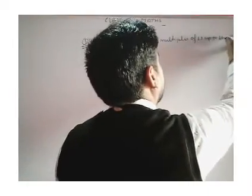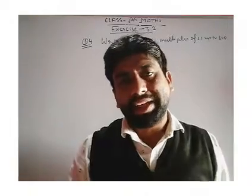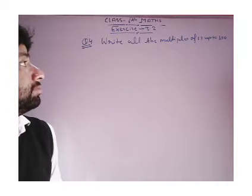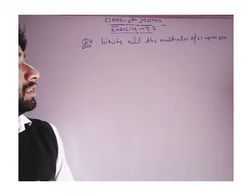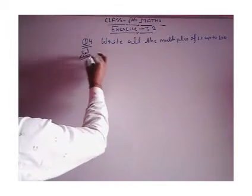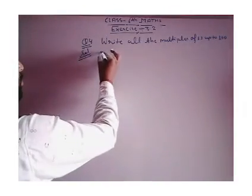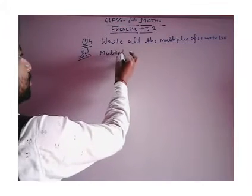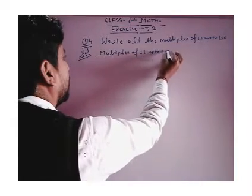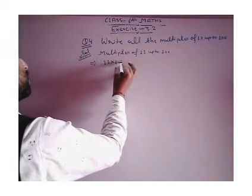Clear? So, write all the multiples of 13 up to 100. Let's check out the multiples of 13 up to 100. The first one: 13 × 1 = 13.